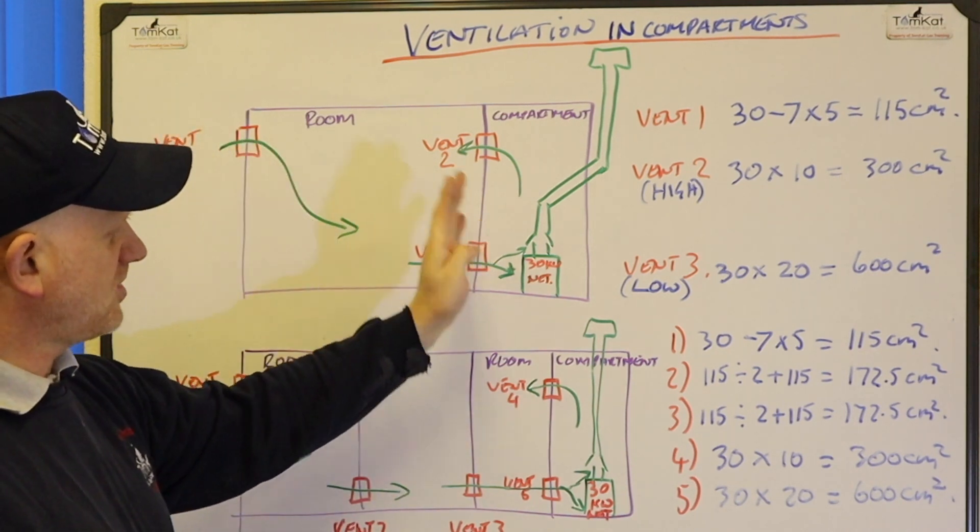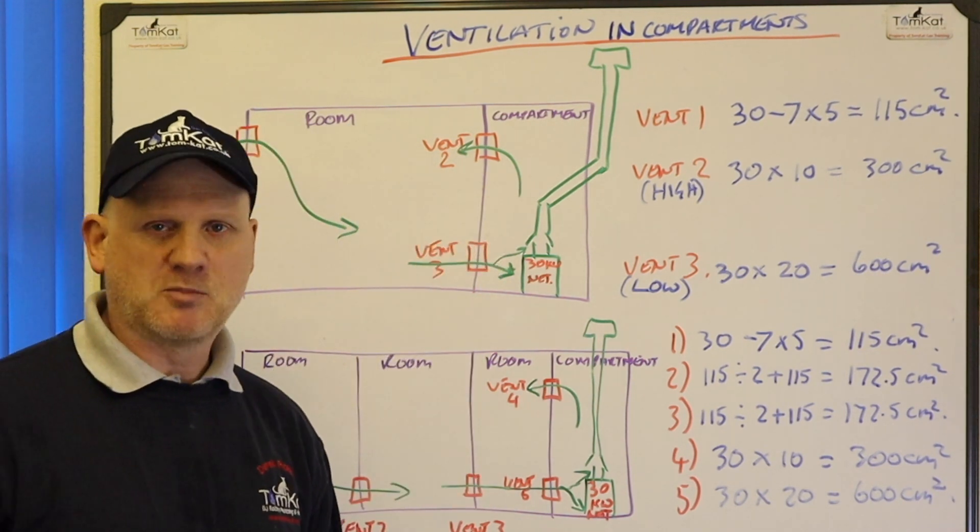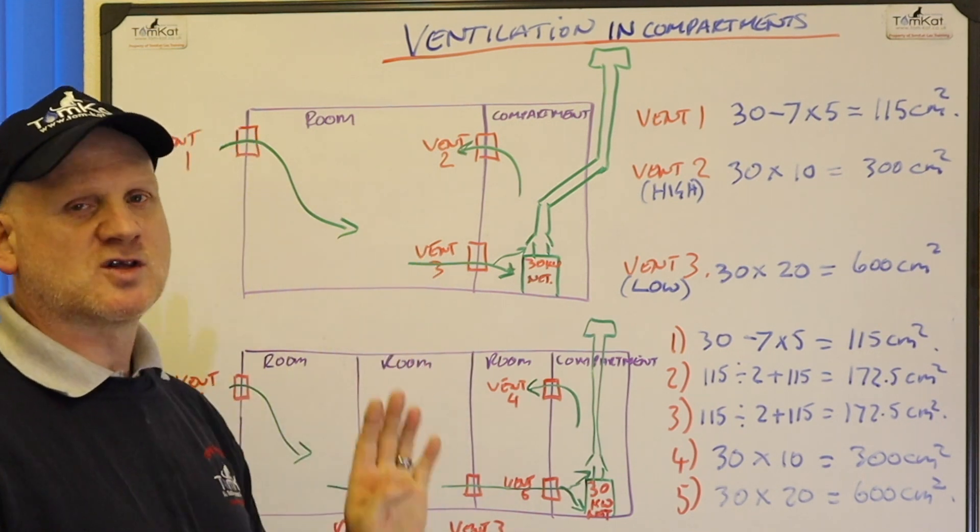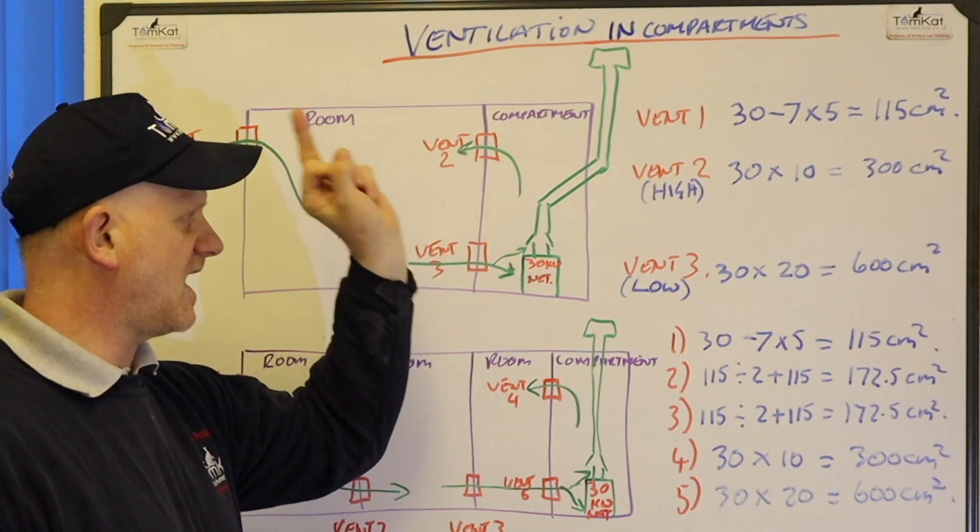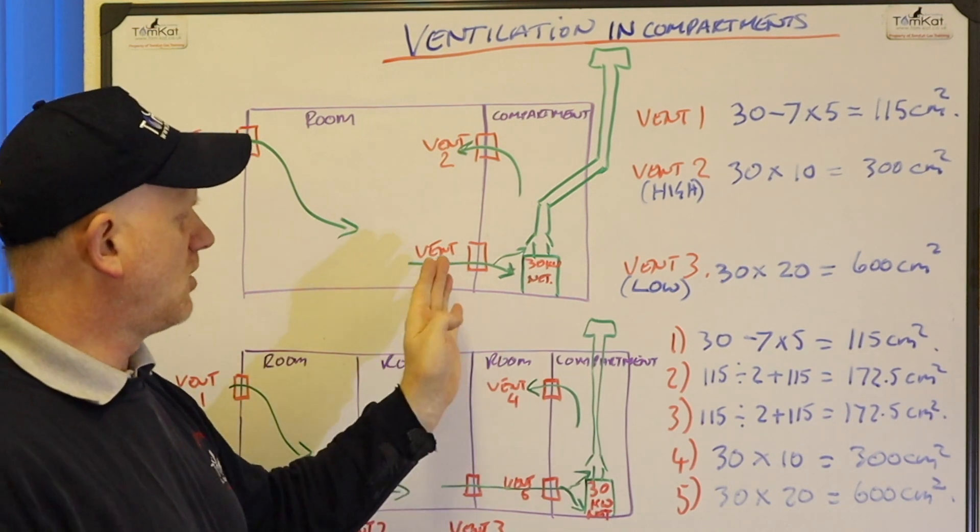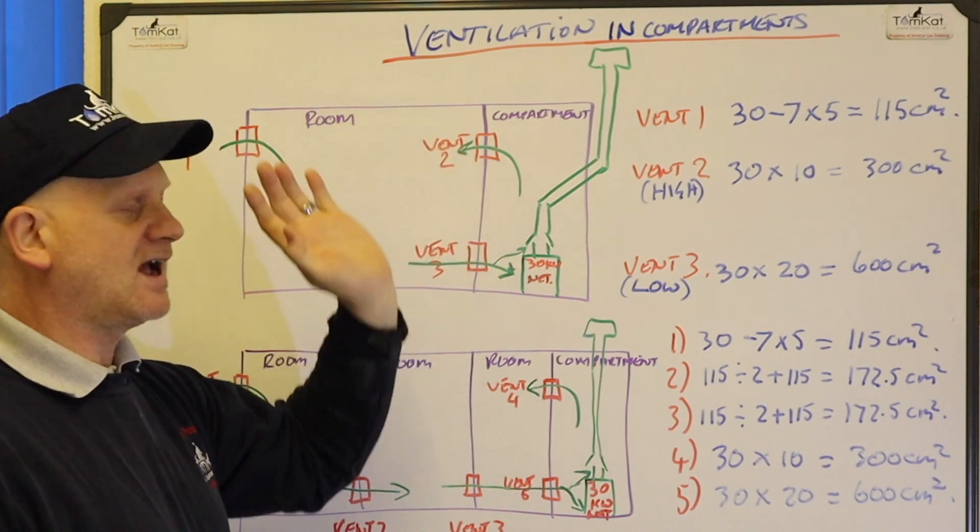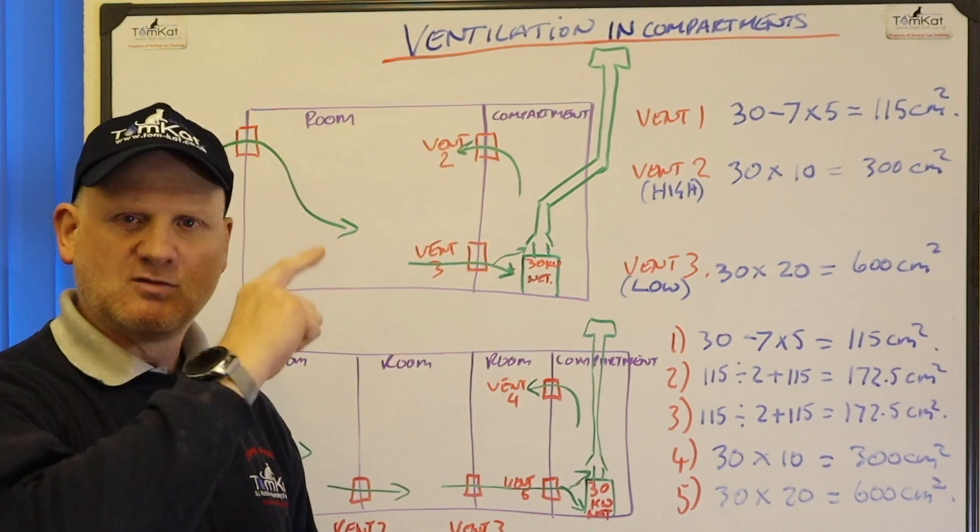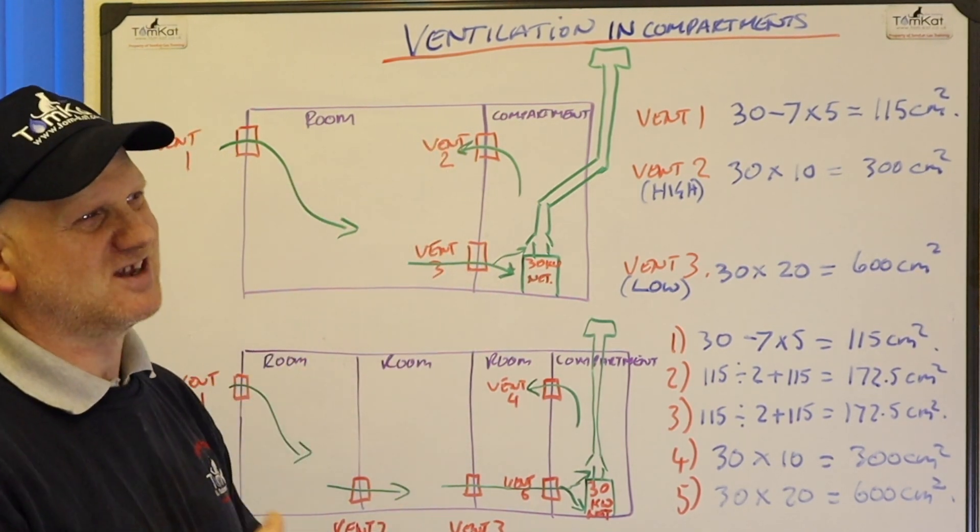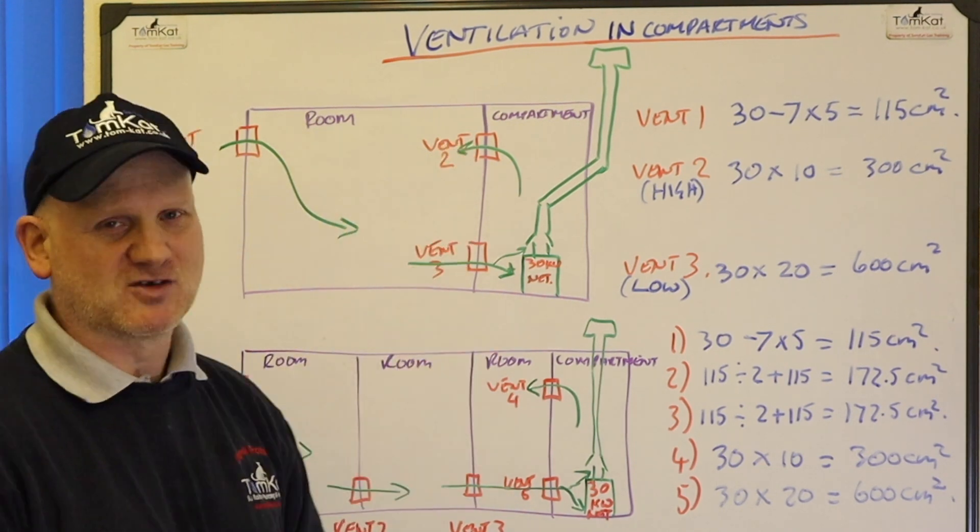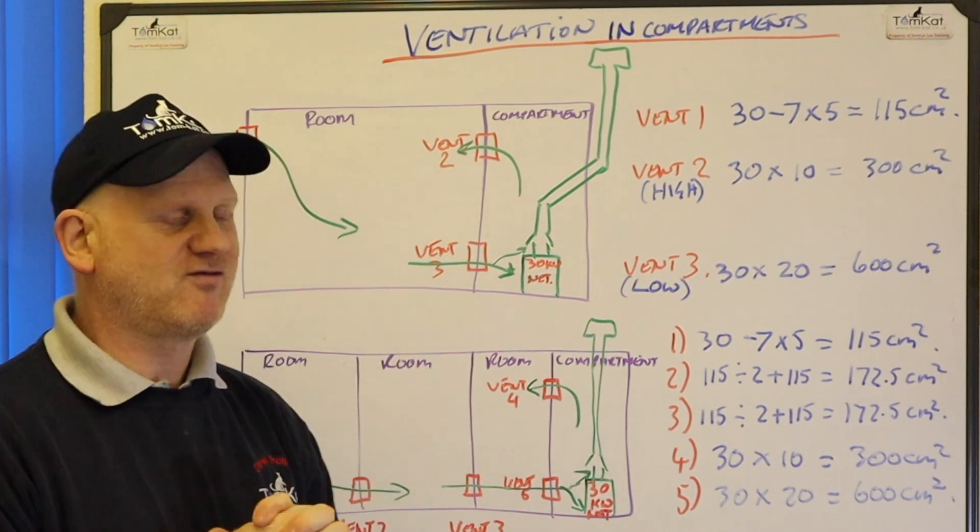And because this boiler is installed in a compartment we require two vents. We need a low level vent and a high level vent. Now the low level vent brings the air in for combustion and the high level vent gets rid of the warm air. It does actually help a little bit with bringing air in for combustion but it's mainly there for cooling.